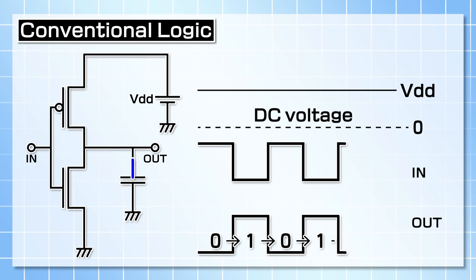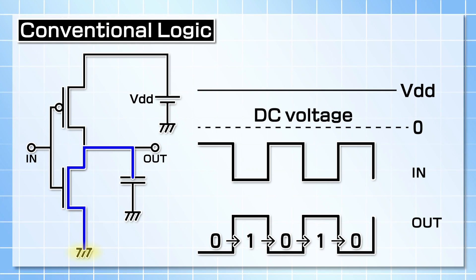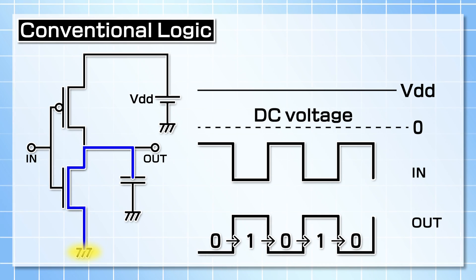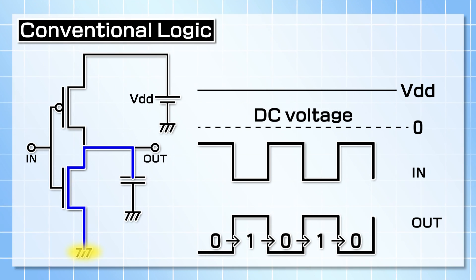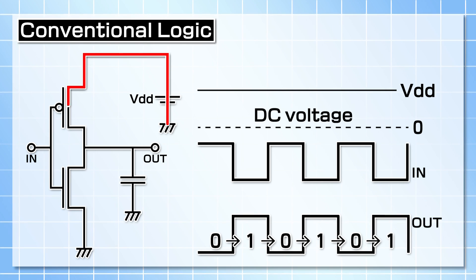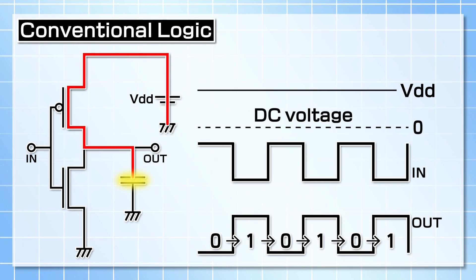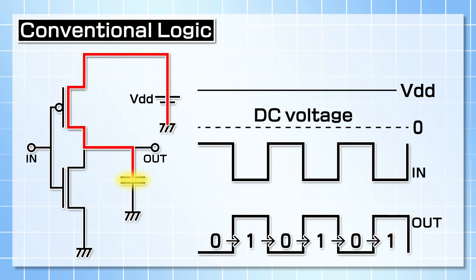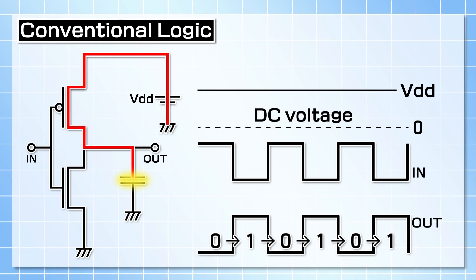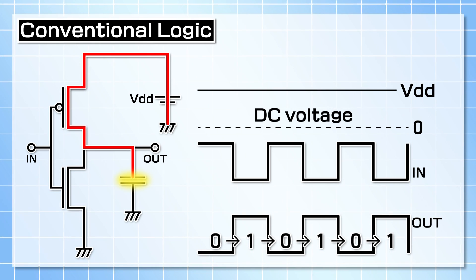On the other hand, when the state of the input signal changes from 0 to 1, the lower side transistor is turned on, and the energy stored in the output node is lost through the transistor.